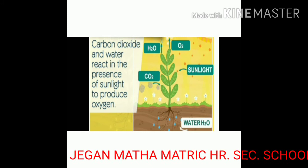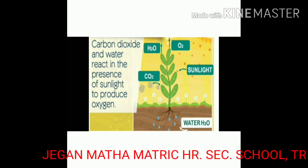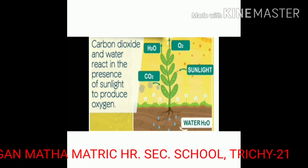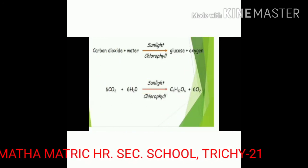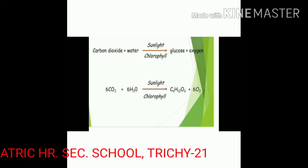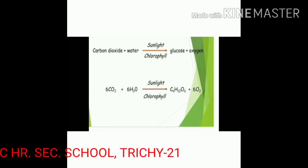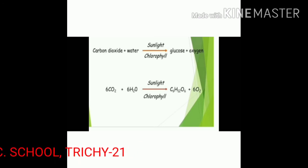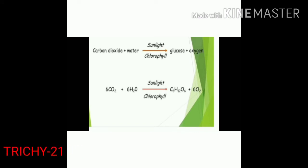Through photosynthesis, plants produce food and release oxygen into the air. Carbon dioxide and water react in the presence of sunlight to produce oxygen. The formula for carbon dioxide is CO2, and for water is H2O. So carbon dioxide plus water react to produce glucose and oxygen. Glucose formula is C6H12O6. The equation is: 6CO2 + 6H2O → C6H12O6 + 6O2.